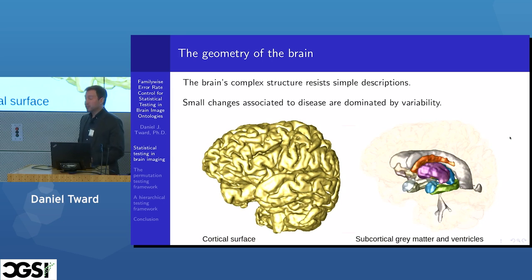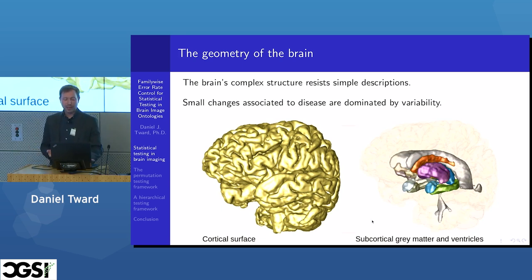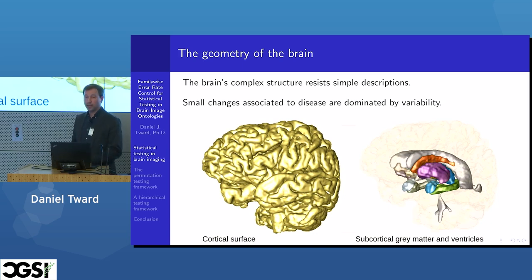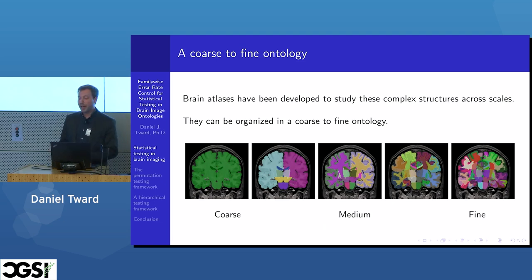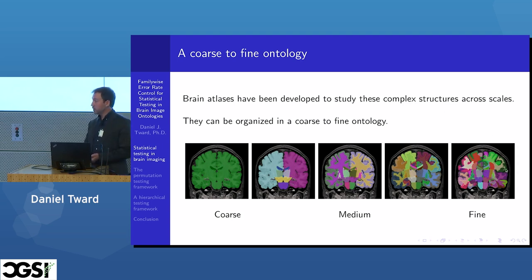Another reason the brain is difficult and interesting to study is its very complex geometry. On the left we see the cortical surface, and on the right a family of deep gray matter structures — very weird shapes that are hard to describe. Because there's so much variability in shape from one person to another, it becomes a challenge to study all these anatomical structures. Fortunately, people have developed brain atlases: standard images where all structures have been annotated across multiple spatial scales from very coarse to very fine resolution. This linking of structures across spatial scales is called an ontology, and the ontology tells us how the brain is organized.